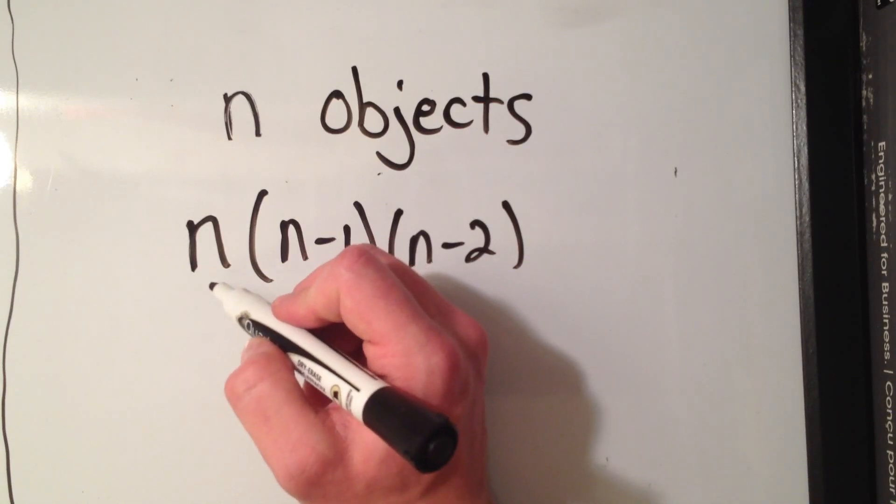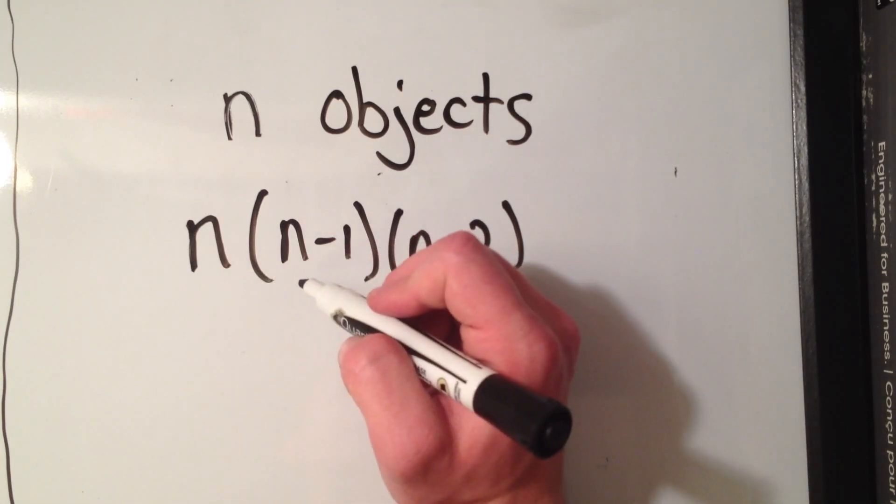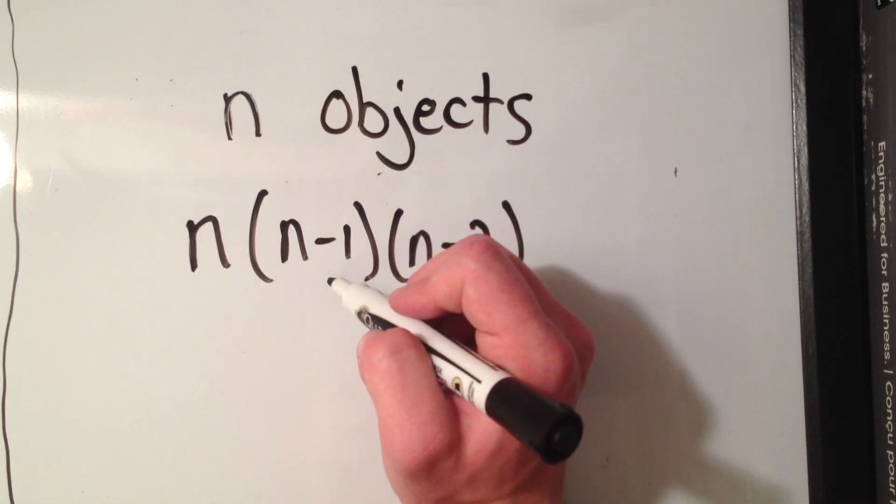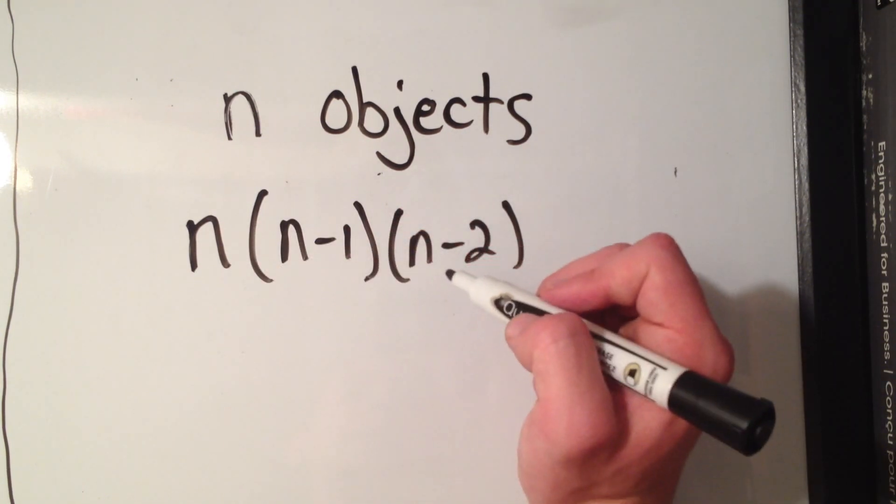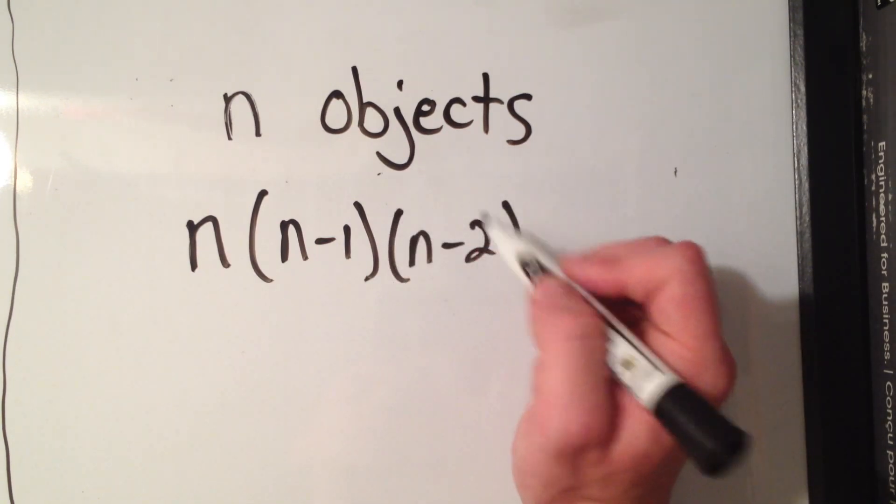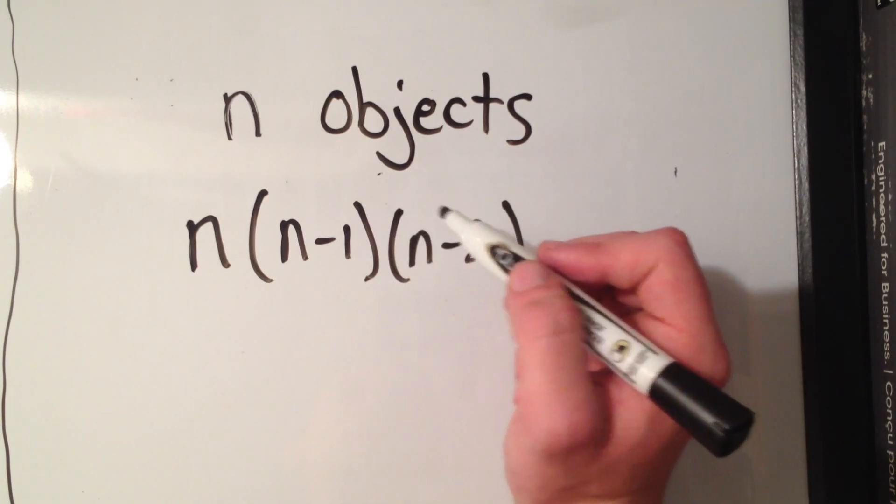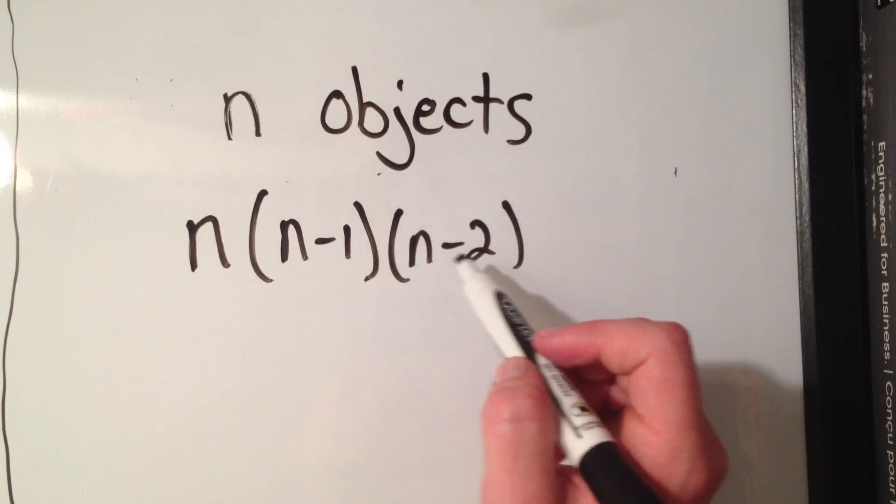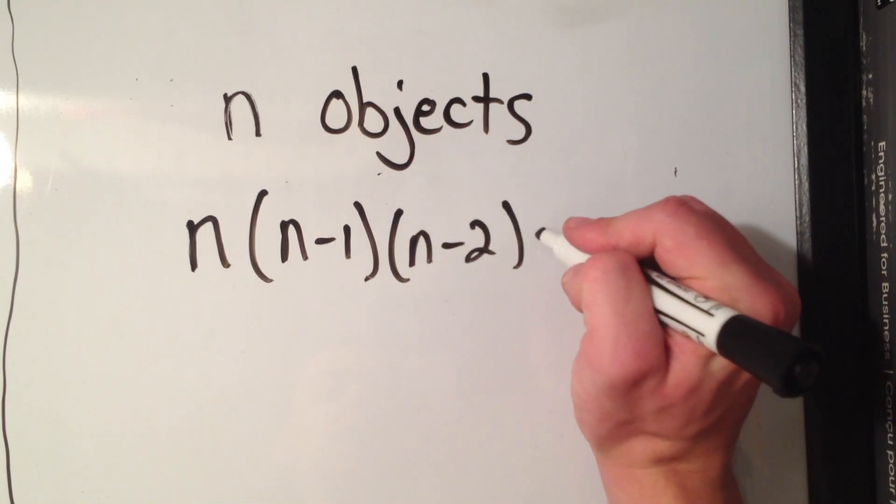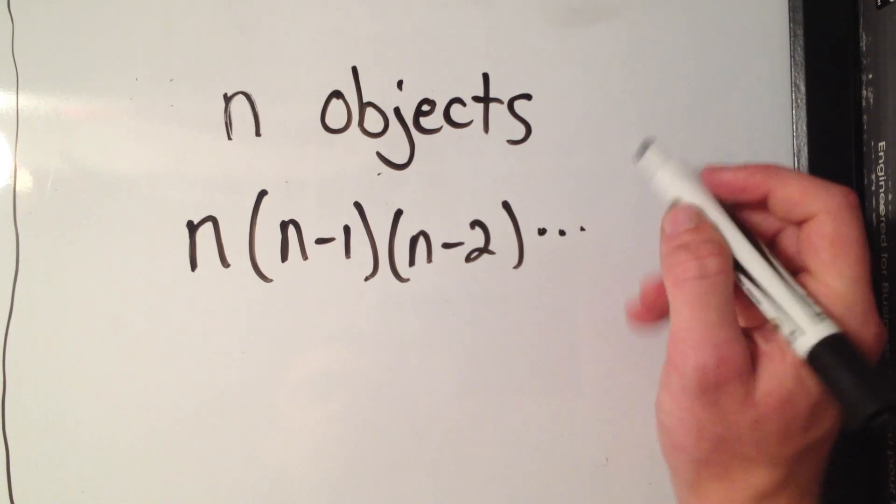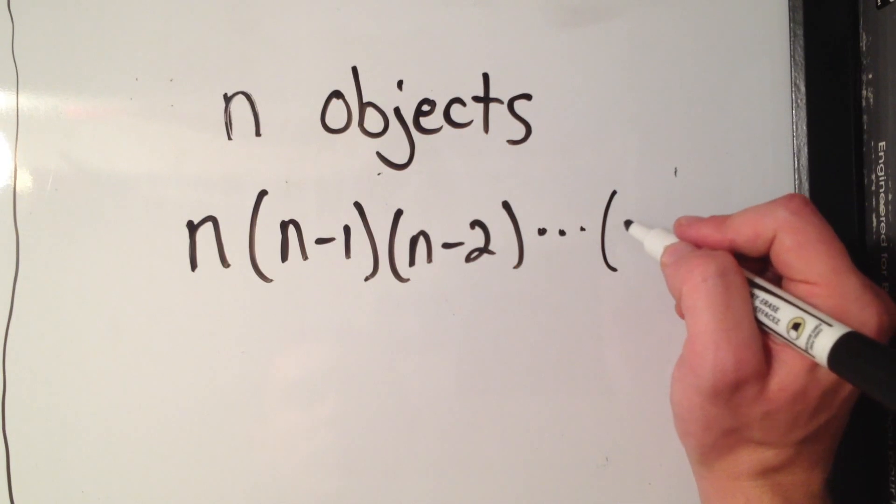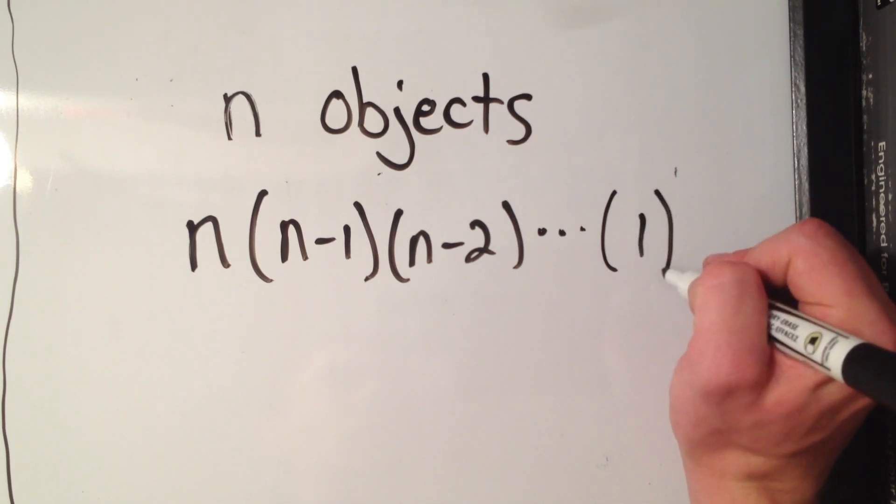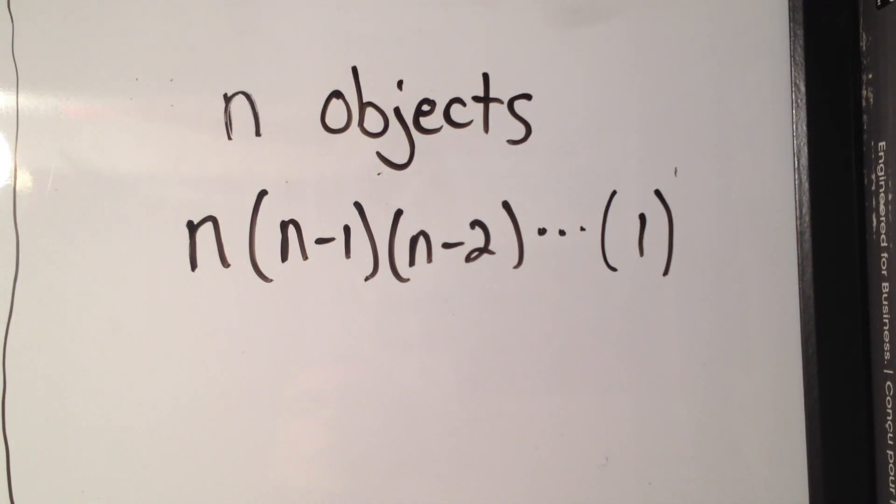This is like where we picked the first book, then we picked the second book and we had one less than our total to pick from. And this was like when we picked our third book we had two less than what we started with to pick from. And this goes on all the way down to one, until you have all but one choice left at the very end.